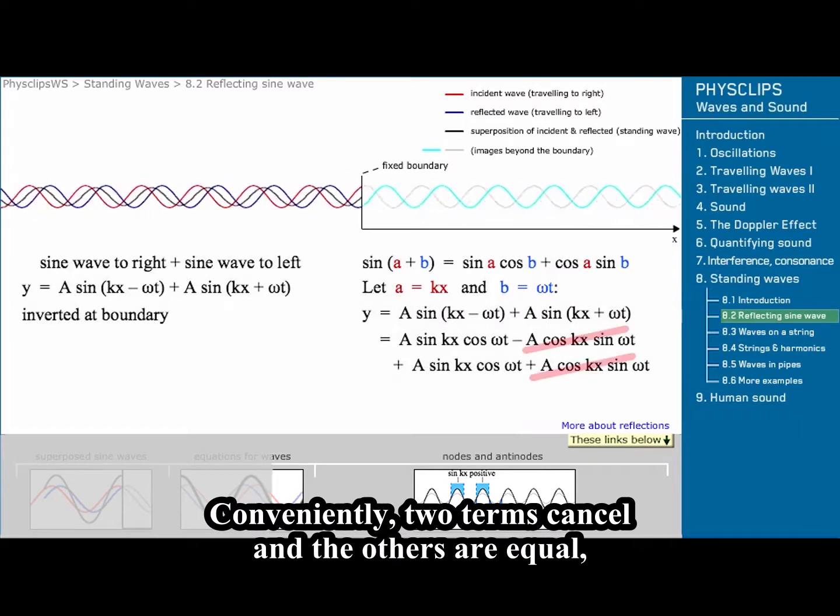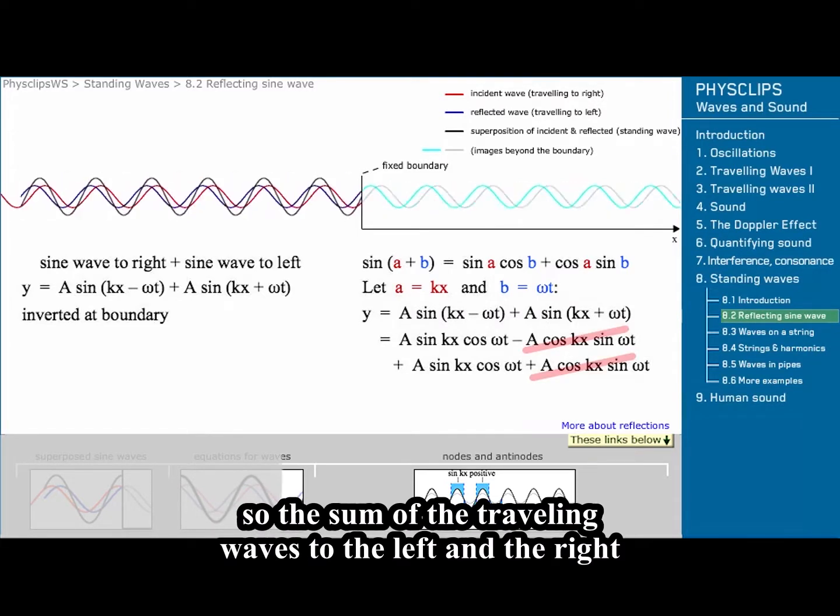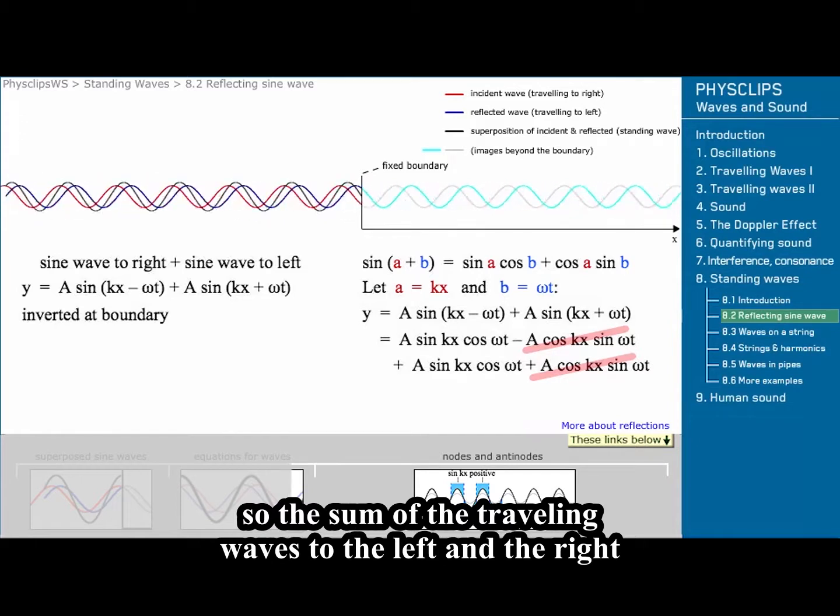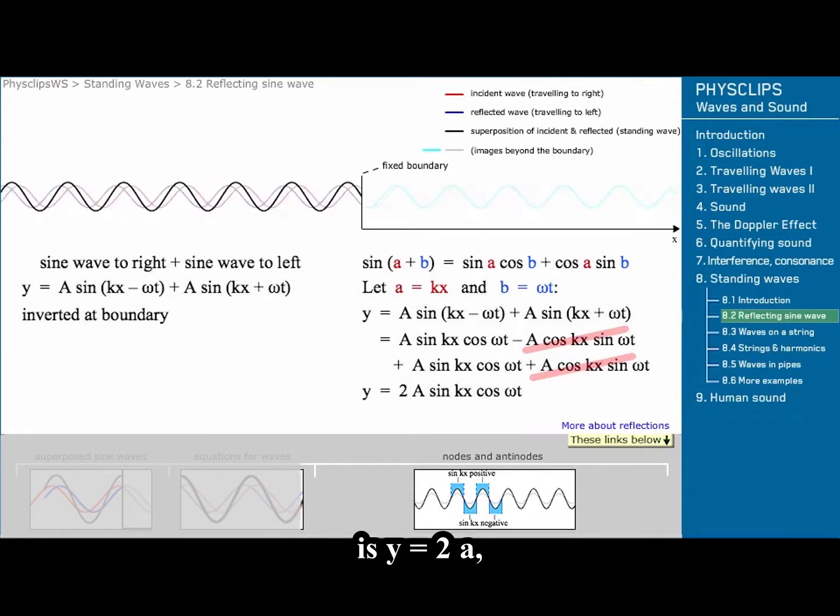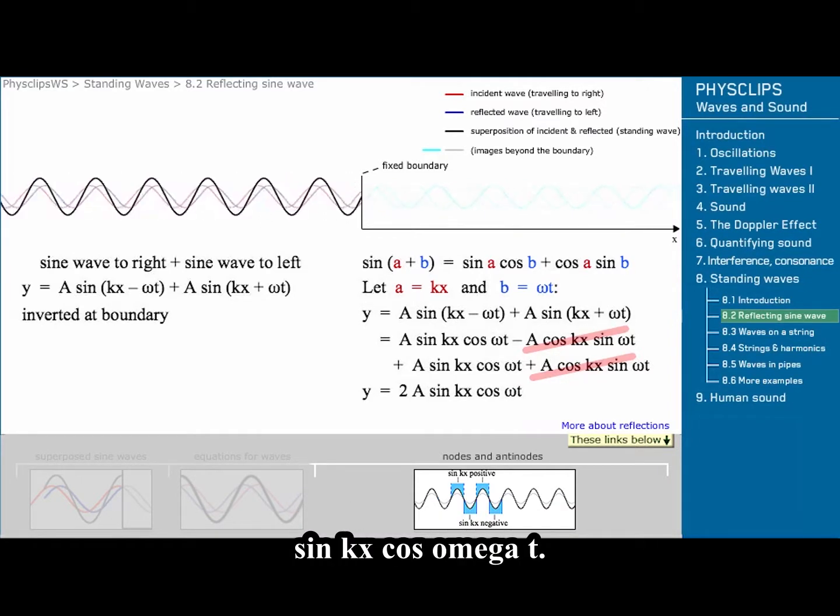Conveniently, two terms cancel and the others are equal, so the sum of the travelling waves to the left and the right is y equals 2A sin kx cos omega t.